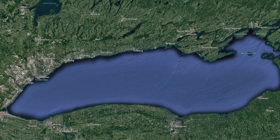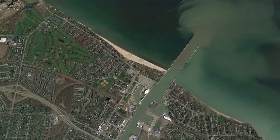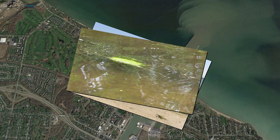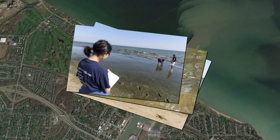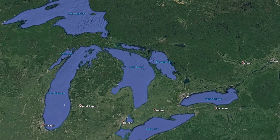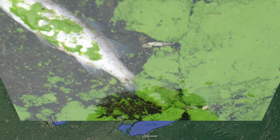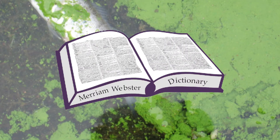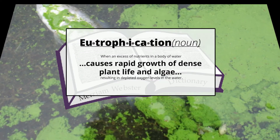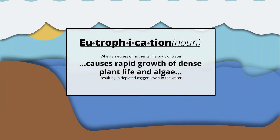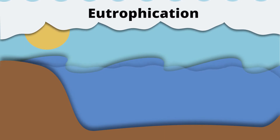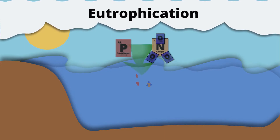Have you ever been to Lake Ontario during the summer? There is a huge amount of algae that builds up — and not just Lake Ontario, but Lake Erie and some other great lakes. Excess algae is caused by a process known as eutrophication, which is the buildup of nutrients in these water systems like phosphorus and nitrate, normally found on the periodic table.